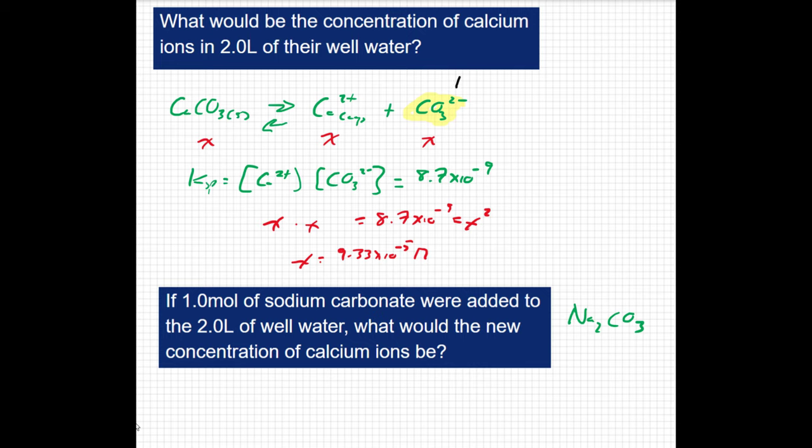If you increase the concentration of one of the products, that equilibrium is going to shift to the left, which means the amount of calcium carbonate is going to decrease. It also means the amount of calcium will decrease. So by increasing the carbonate, we're going to decrease the calcium carbonate and the calcium ion in solution.